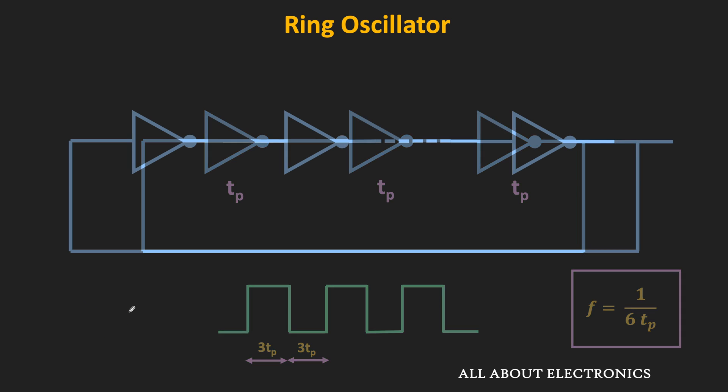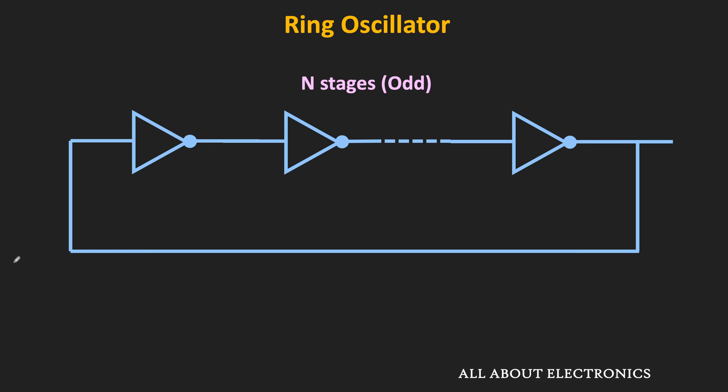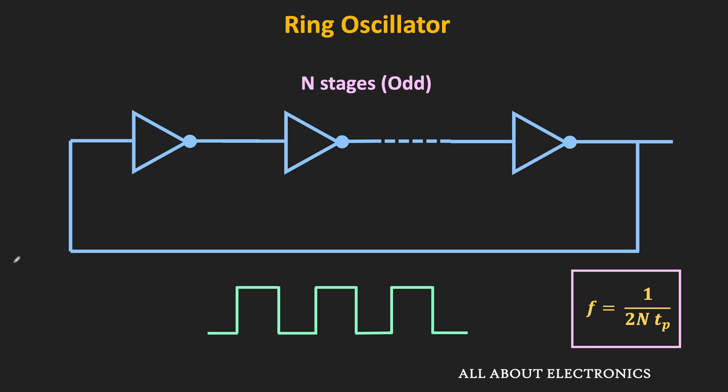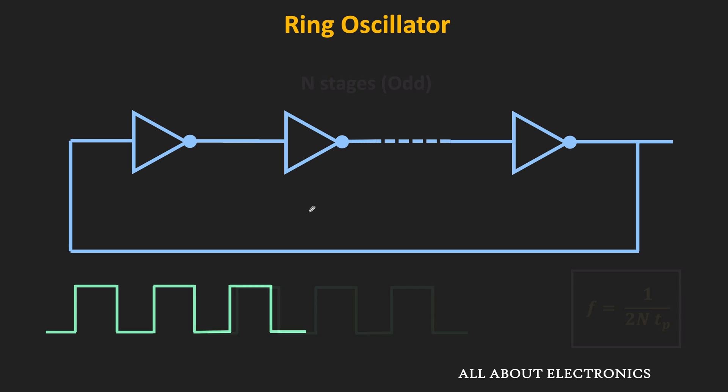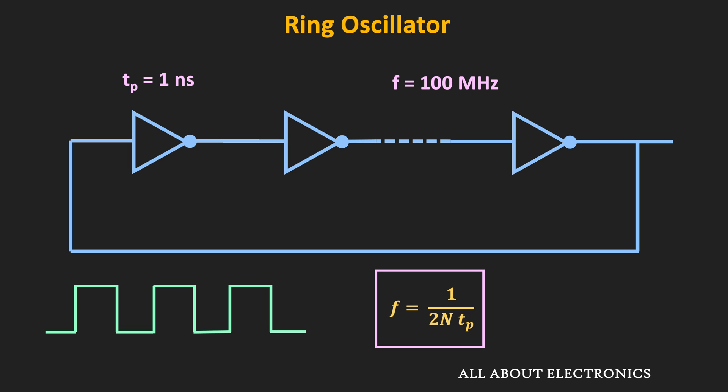In general, if we have n inverters in the ring oscillator and the propagation delay of each inverter is tp, then the frequency of oscillation is 1/(2·n·tp). So with a given propagation delay, by changing the number of inverters it is possible to change the oscillation frequency. For example, if the propagation delay is 1 ns and the required oscillation frequency is 100 MHz, then from this equation we need to connect a total of 5 inverters in the ring oscillator.